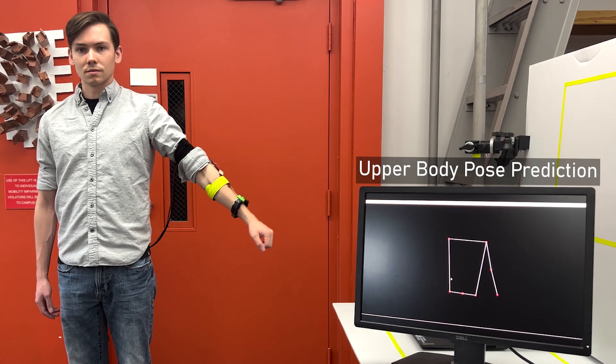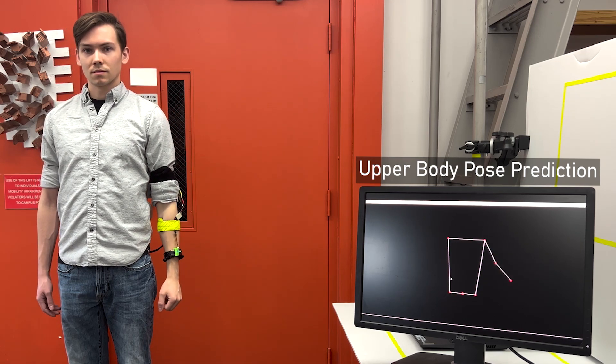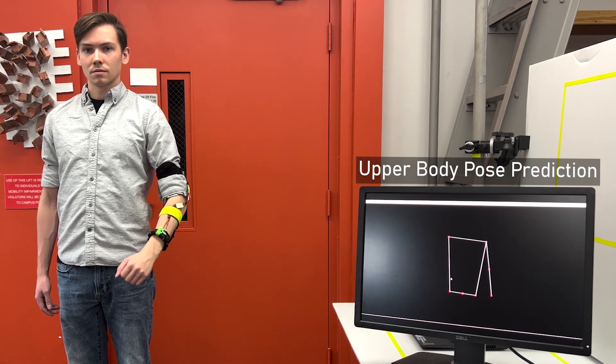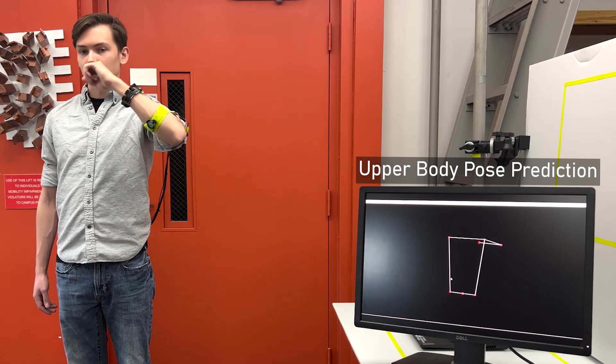This rich data can be used to power a wide variety of applications. For instance, DiscoBand can estimate the user's upper body pose in real-time. In our user study, our 10 participants had a mean per joint positional error of 5.9 centimeters.